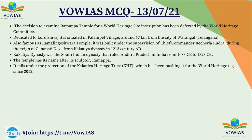Recently, the decision to examine Ramapa Temple for World Heritage Site inscription was deferred by the World Heritage Committee. The temple falls under the Kakatiya Heritage Trust, which has been pushing for a World Heritage tag since 2012. The temple is dedicated to Lord Shiva and is also known as Ramalingeshwara Temple. It was built under the supervision of chief commander Racherla Rudra during the reign of Ganapati Deva of the Kakatiya dynasty in 1213 AD. The Kakatiya dynasty ruled most parts of Andhra Pradesh and some parts of Maharashtra and Karnataka. The temple is named after its sculptor, Ramapa.